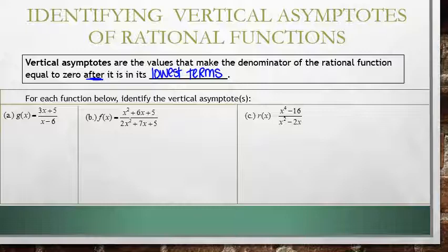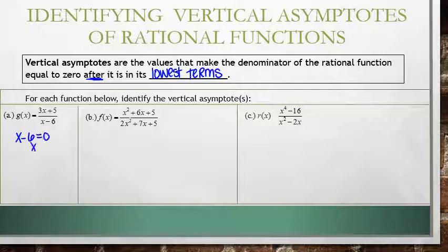For each function, identify the vertical asymptotes — these are the values that make the denominator equal to zero after simplifying. For letter A, the numerator 3x plus 5 and denominator x minus 6 cannot be simplified any further, so there's nothing to cancel. We just look at when the denominator equals zero, which is when x equals 6, giving us a vertical asymptote at x equals 6.